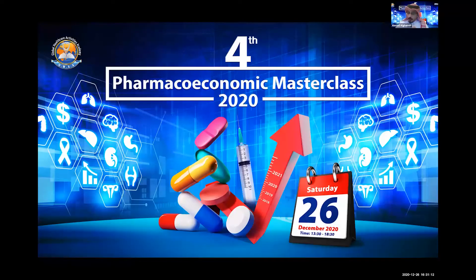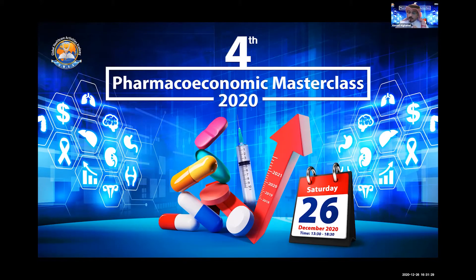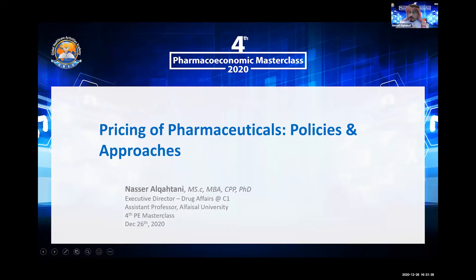Dr. Nasser Ghattani has received his pharmacy degree from the College of Pharmacy at Kingside University and has also earned his clinical pharmacy degree, master's of clinical pharmacy degree from UCL, and a PhD in pharmaceutical policy and outcome research from the University of Auburn in Alabama. Dr. Nasser is currently an executive director for drug affairs and pharmaceuticals at the first central healthcare cluster in the Ministry of Health.